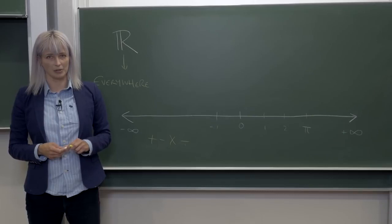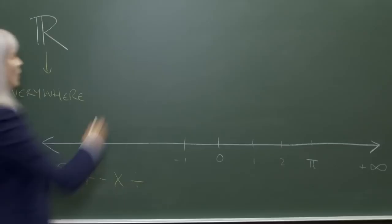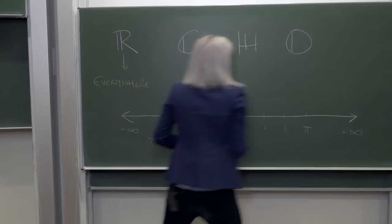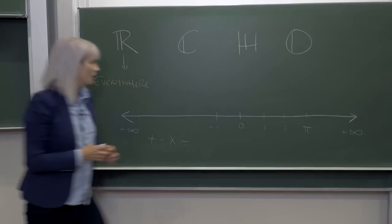It turns out that there are only four of these very special number systems. They're called the real numbers, the complex numbers, the quaternions, and the octonions.